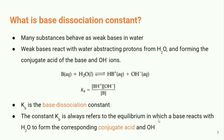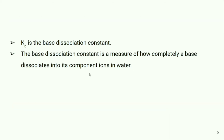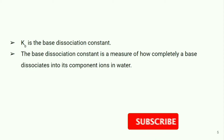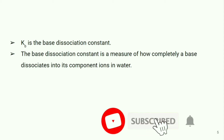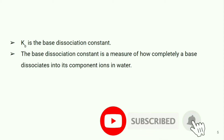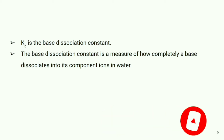So to recap once again: Kb is the base dissociation constant, and it is the measure of how completely a base dissociates into its component ions in water. Component ions means OH⁻. This is very simple.